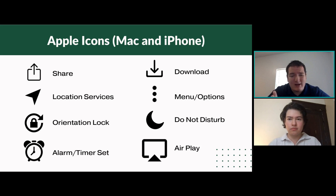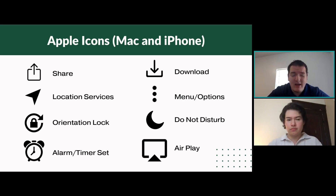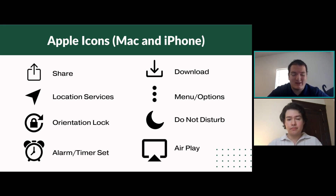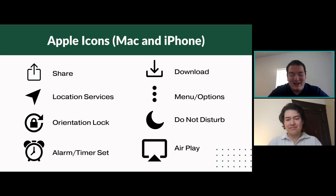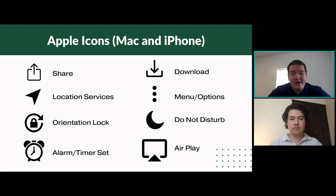That is pretty universally the share icon, especially on iPhones. The next one is the location services arrow — that will show up in the top right corner of both your MacBook or your iPhone. It just means one of your apps or websites is using your location. People get freaked out about it, but it's not always a bad thing — especially if it's something like the weather, which just needs to know where you are to be accurate. It's up to you whether or not you give it access.